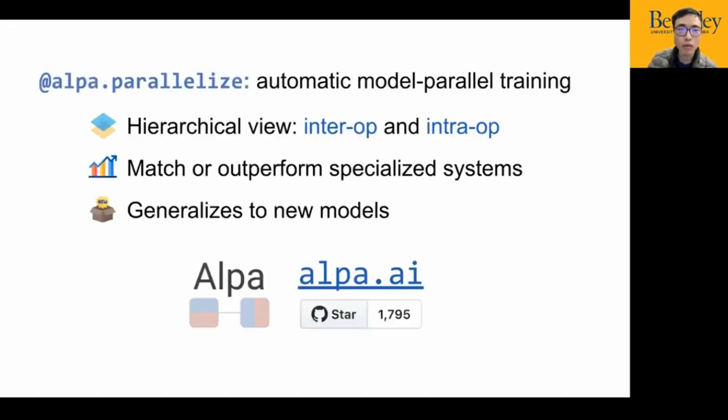In summary, we present ALPA, a system for automatic model parallel training with both inter- and intra-operator parallelism. ALPA matches or outperforms specialized systems and generalizes to new models. You can try ALPA now and star us on GitHub by visiting alpa.ai. I'm happy to answer your questions. All right. Thank you so much for that fantastic presentation. And if anyone has questions, please leave them in the chat. Otherwise, I'll just ask a few myself.